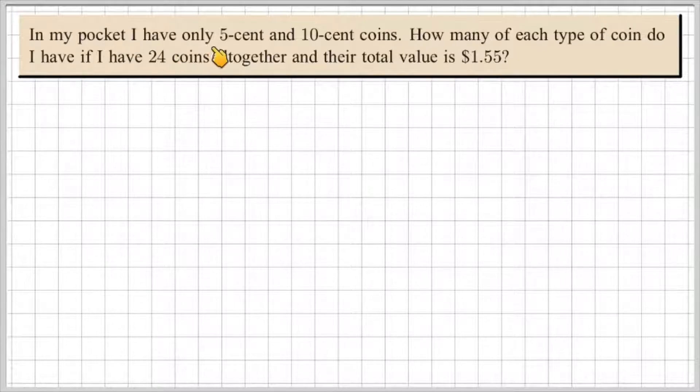In my pocket, I have only 5 cent and 10 cent coins. How many of each type of coin do I have if I have 24 coins altogether, and their total value is $1.55?